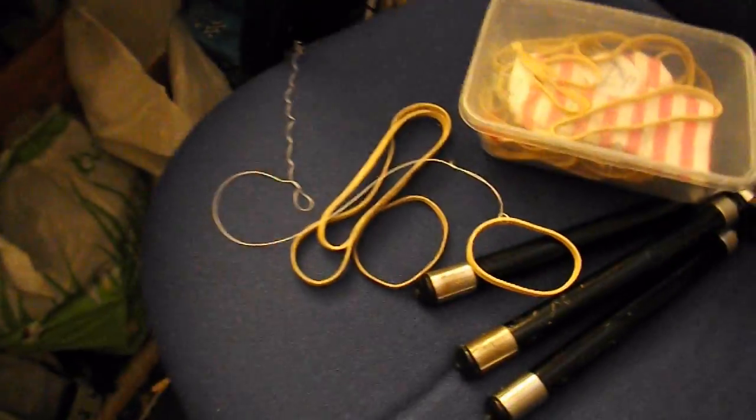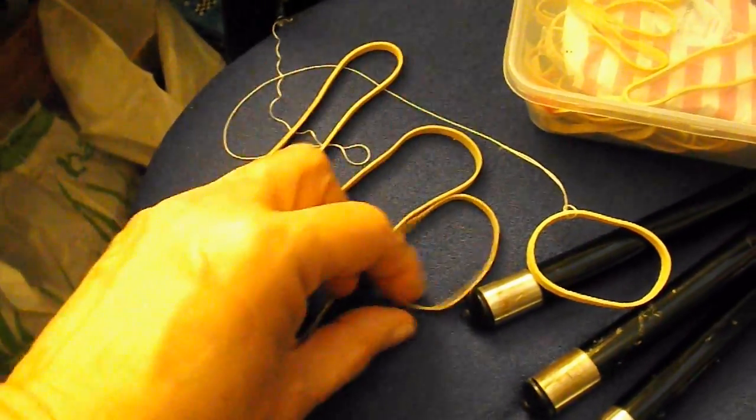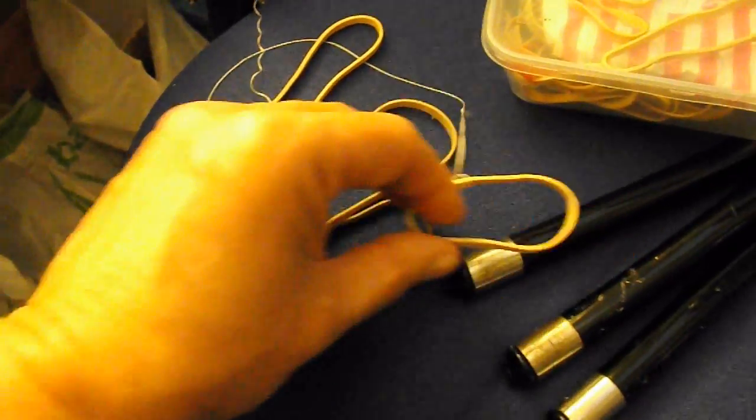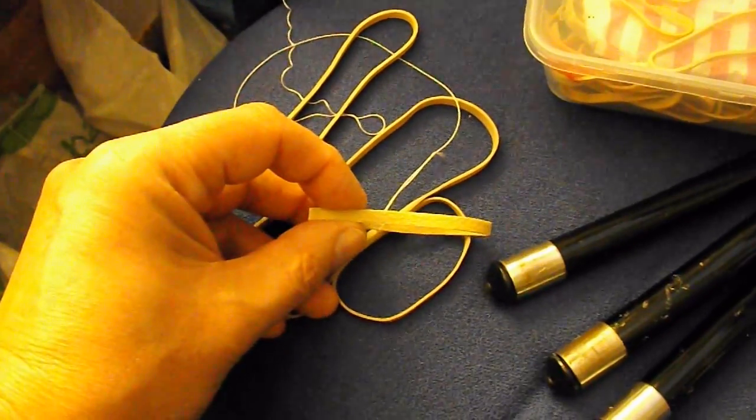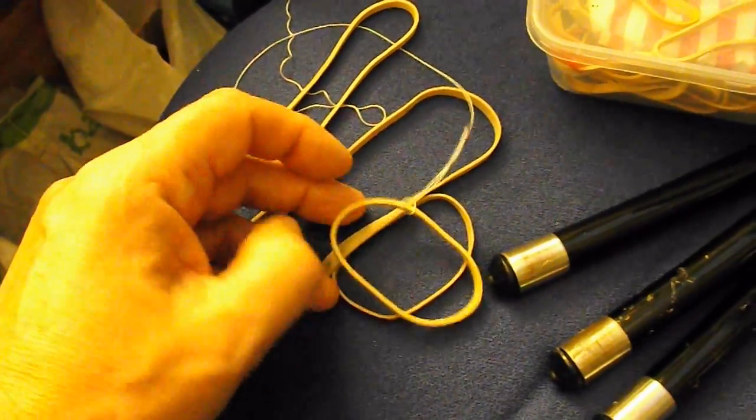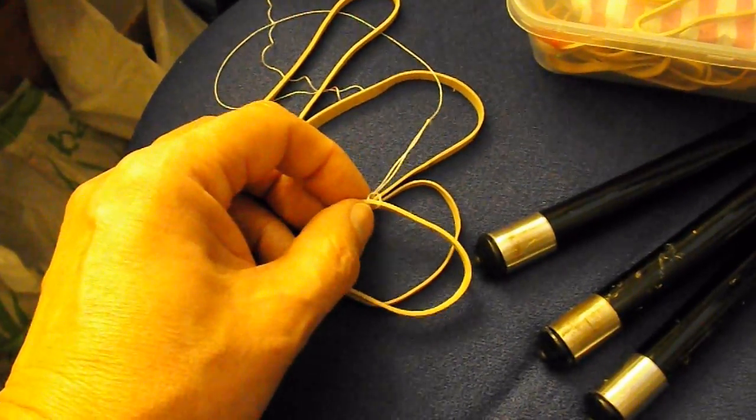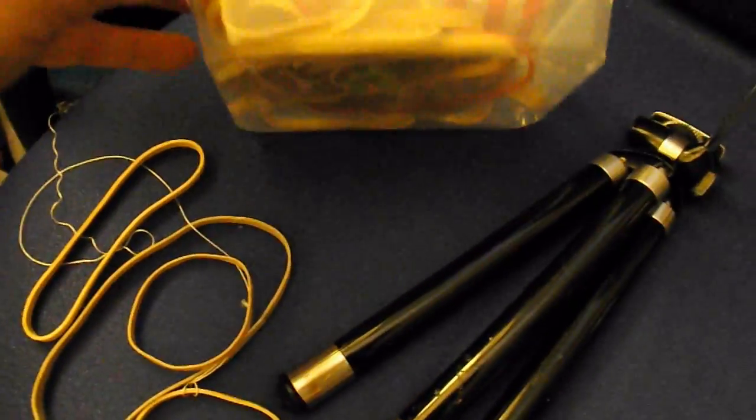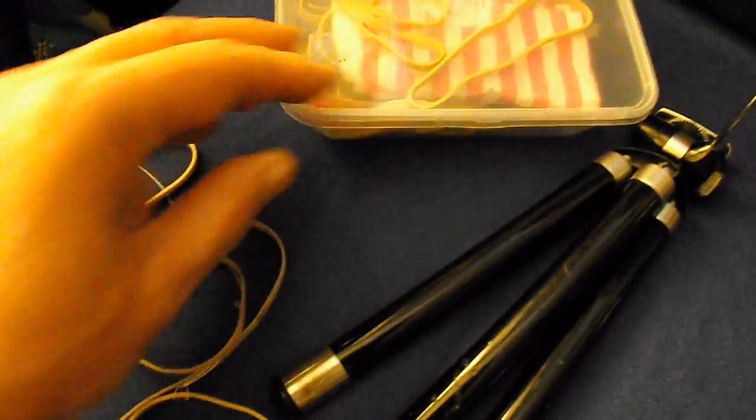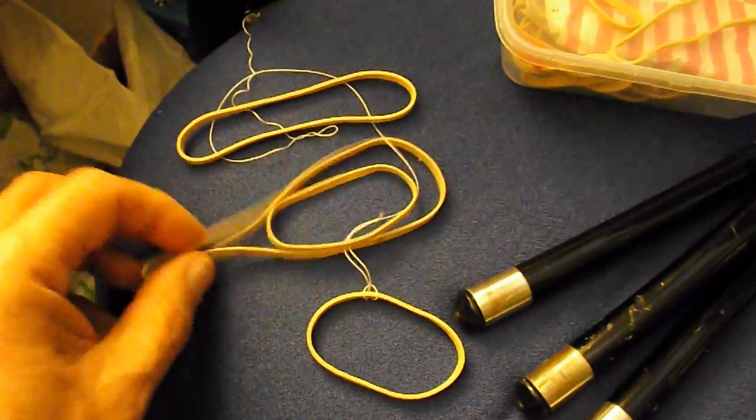Now, a slight problem with size 64 rubber bands, I don't have any. Size 64 is, I think it's three and a half inches long, a quarter of an inch wide, and I can't remember how thick it is, a sixteenth of an inch or something like that. And none of the ones that I've got are exactly that size.